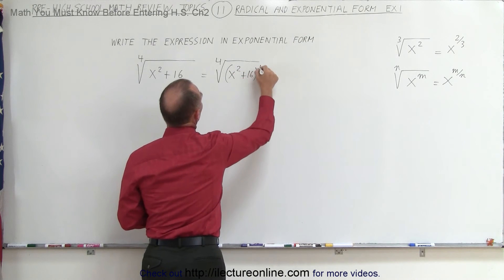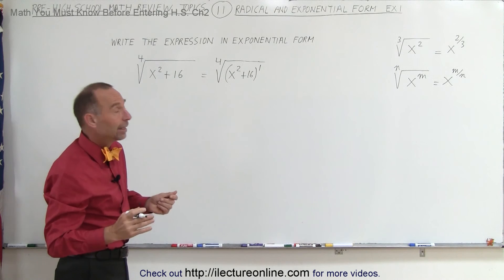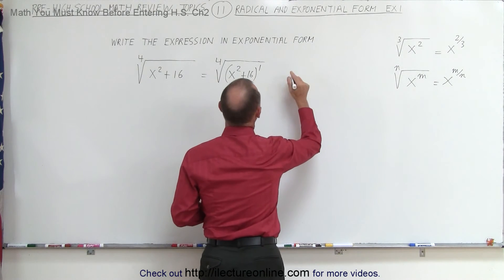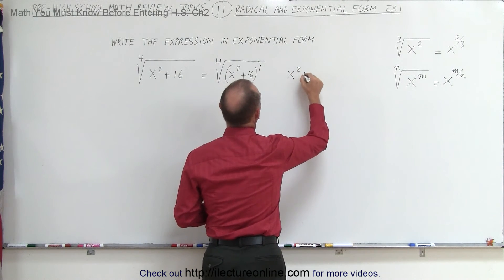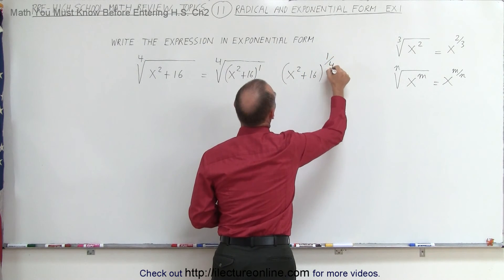In essence, it's to the first power, even though it's not written. Which means that once you think of it that way, you can write it in exponential form. This then becomes the quantity x squared plus 16 raised to the one-fourth power.